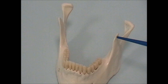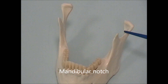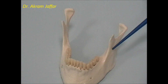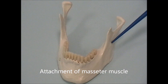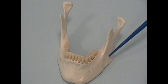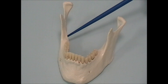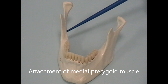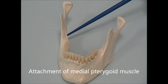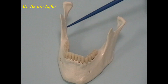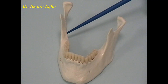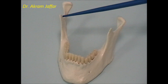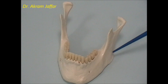In between the coronoid process and the condylar process, this is called the mandibular notch. Masseter muscle is attached here at the angle of the mandible from the outside. Immediately opposite to the attachment of masseter and on the inside of the angle of the mandible is the attachment of the medial pterygoid muscle. So the mandible provides for the attachment of all the muscles of mastication: medial pterygoid, lateral pterygoid, temporalis, and masseter.